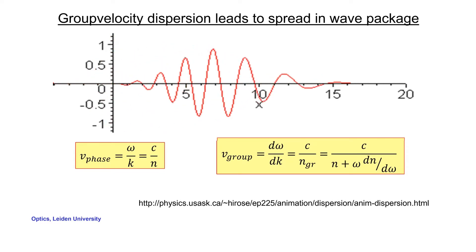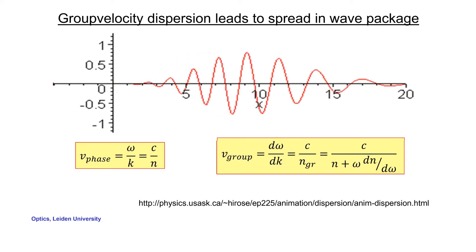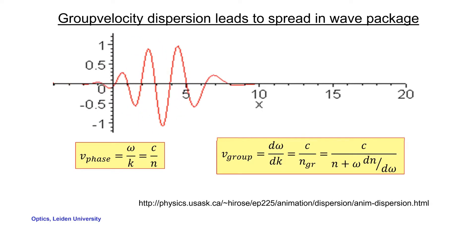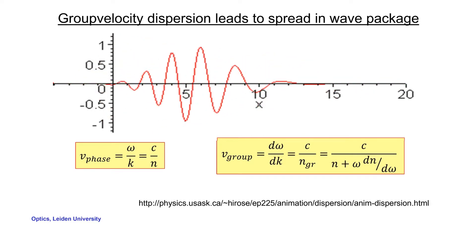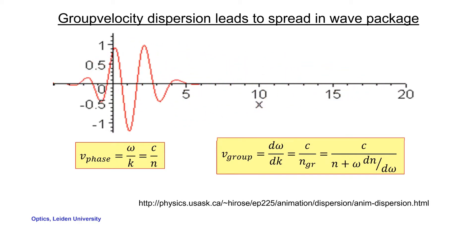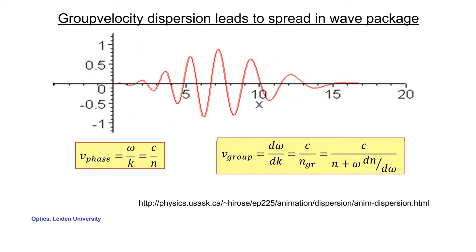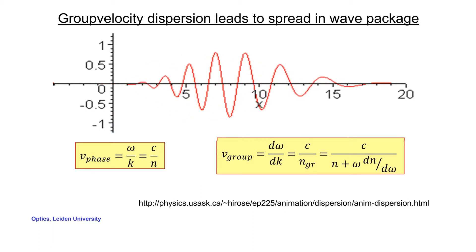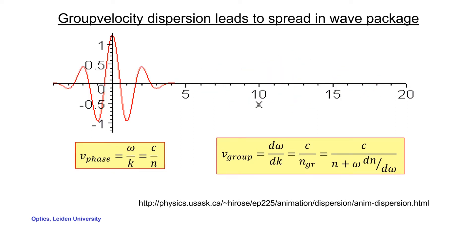Similar phenomena occur when you consider the propagation of a wave packet composed not of one or two frequencies but of a whole continuum of many frequency components. If you look at the movie, you'll see that the velocity at which the oscillations propagate — the red oscillations — can be different from the velocity at which the package as a whole moves. The velocity of the oscillations is given by the ratio ω over k, which in optics is expressed as the speed of light divided by the refractive index, using the average refractive index for the average ω and k.